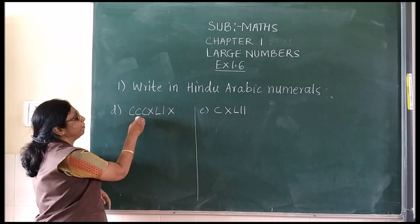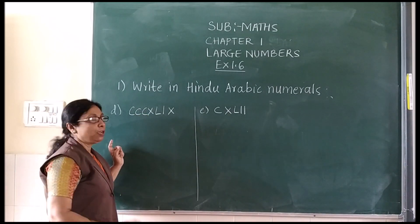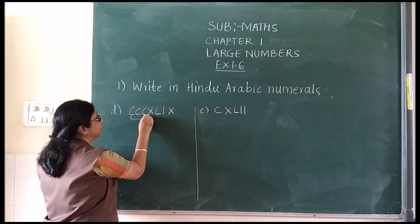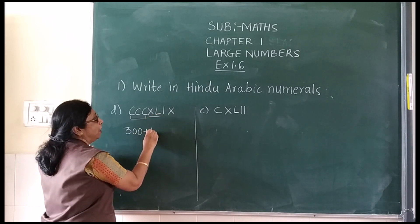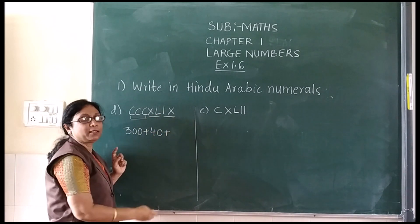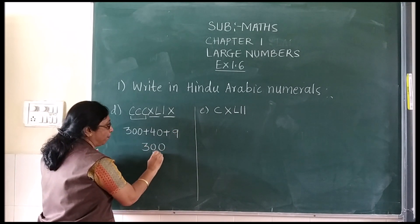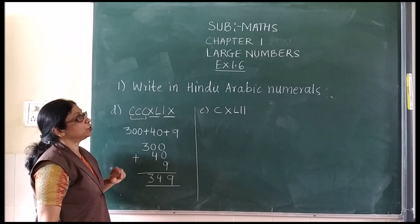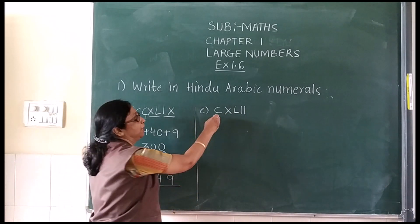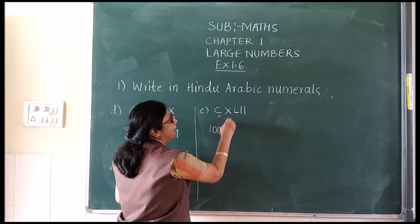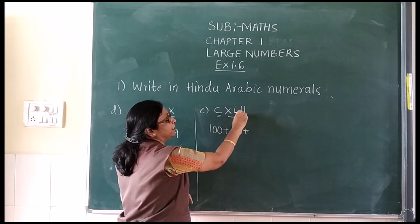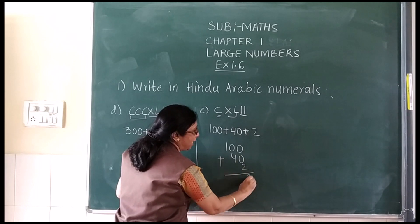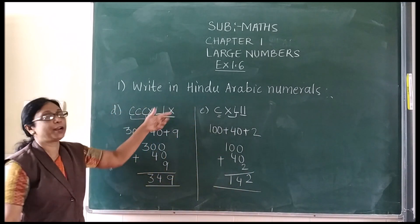For the D sum, split CCC: 1 C stands for 100, so 2 C = 200, and CCC = 300. Then XL = 40 and IX = 9. Add these numbers: 300 plus 40 plus 9 = 349. For E sum: CC stands for 200, XL stands for 40, and II stands for 2. Place the numbers, add them, and you get the Hindu Arabic numeral. In this way you can convert Roman numerals into Hindu Arabic numerals.